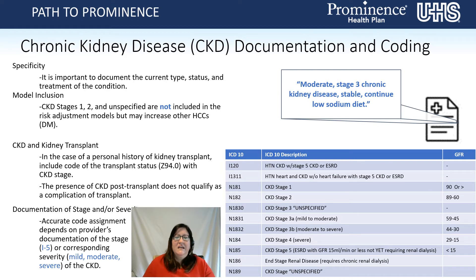CKD and kidney transplant: in the case of a personal history of a kidney transplant, always include the Z94.0 code. The presence of CKD post-transplant does not qualify as a complication of the transplant. If your patient had end-stage renal disease and received a kidney transplant, you would no longer code end-stage renal disease — only if the new kidney became diseased. Documentation of stage and/or severity of chronic kidney disease is extremely important; accurate code assignment is dependent on the provider's documentation. Stages 1 through 5, or corresponding severity — mild, moderate, or severe — can be coded.